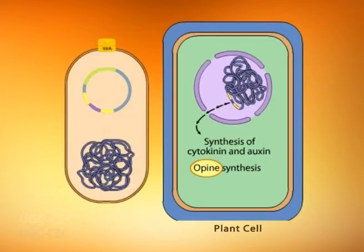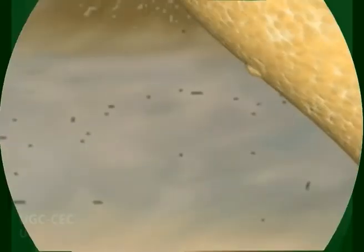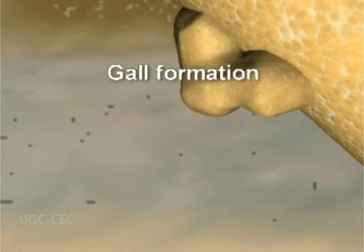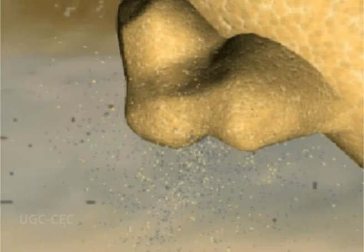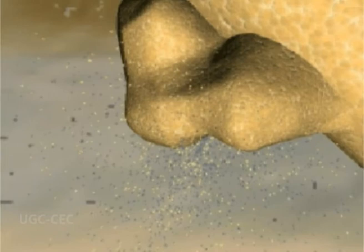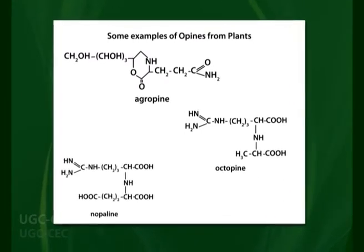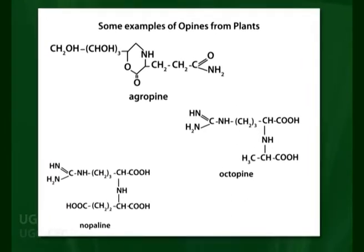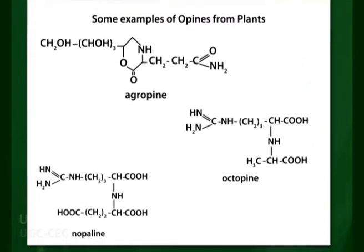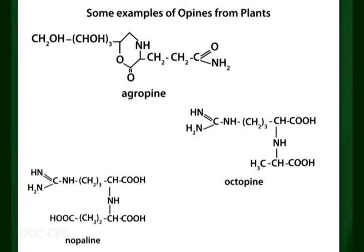These plant hormones upset the normal balance of cell growth, leading to the production of crown galls, which provide a nutrient-rich environment for the bacteria. The opines are unique amino acid derivatives, and the agrocinopines are unique phosphorylated sugar derivatives. All these compounds can be used by the bacterium as the sole carbon and energy source. Because they are absent from normal plants, they provide Agrobacterium with a unique food source that other bacteria cannot use.